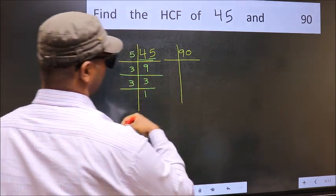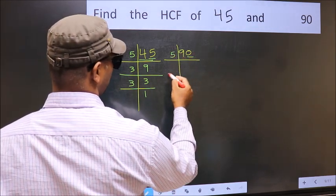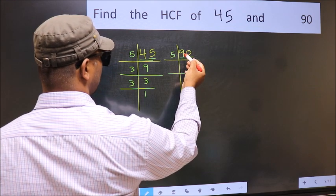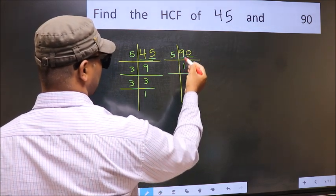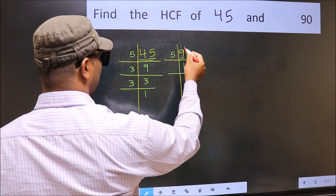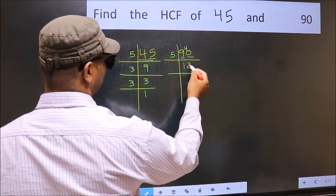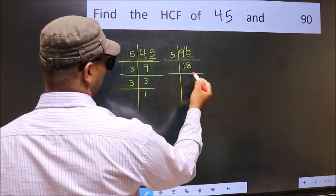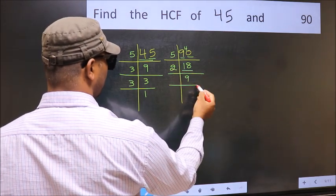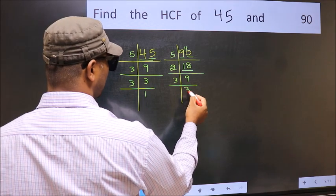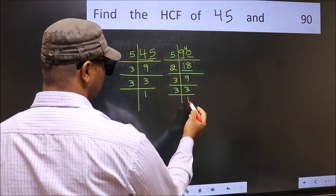Now for the other number, 90: the last digit is 0, so we divide by 5, giving 18. 18 is 2 times 9, and 9 is 3 times 3. Since 3 is a prime number, the factorization stops at 3 times 3.